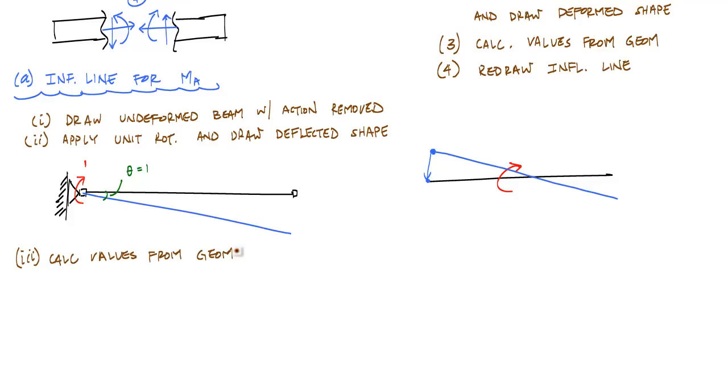And the thing you have to remember when you calculate deformations or this deflected shape used for influence lines is that the small angle assumption is still true, which means that cosine of theta is approximately 1, sine of theta is approximately theta, and tangent theta is approximately theta.